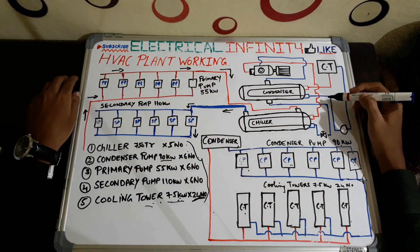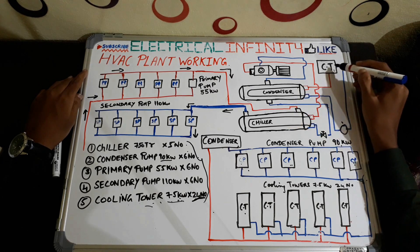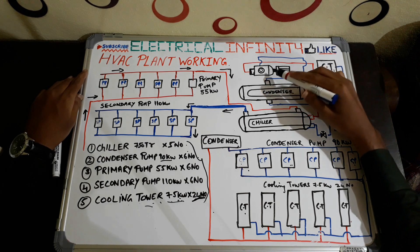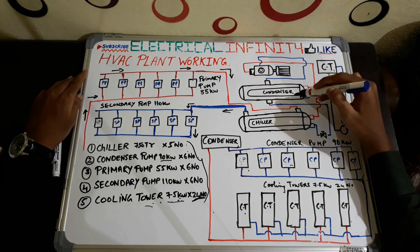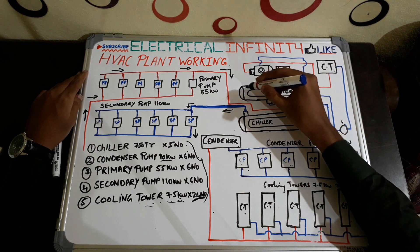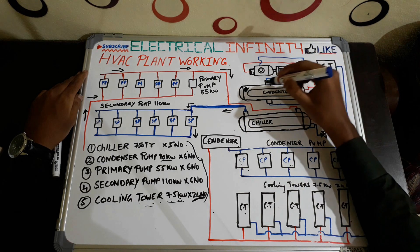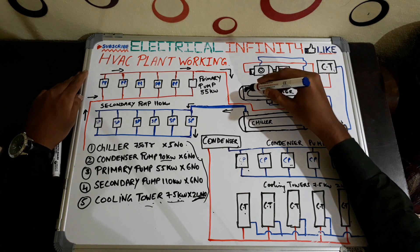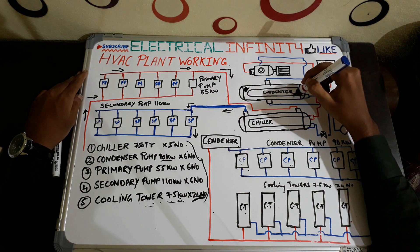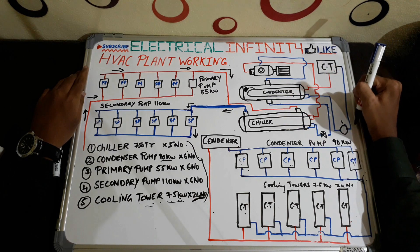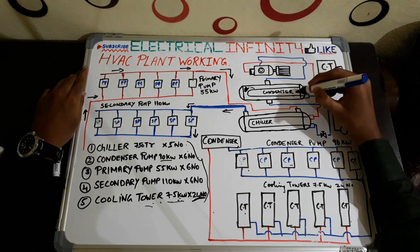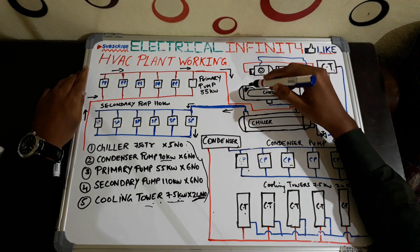This is a condenser, this is a chiller, this is a cooling tower, and here is a condenser pump for pumping cool water into the condenser. This one is a compressor and motor for compressing the refrigerant. The cool refrigerant in the condenser is present in the shell type, while the water from the cooling tower is present in the tube type. The cool water from the cooling tower is sent to the condenser pump, which pumps it into the condenser.